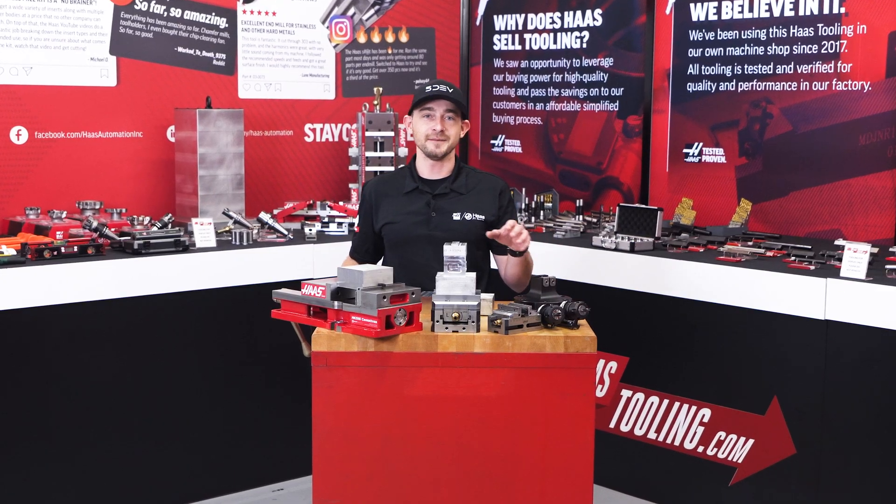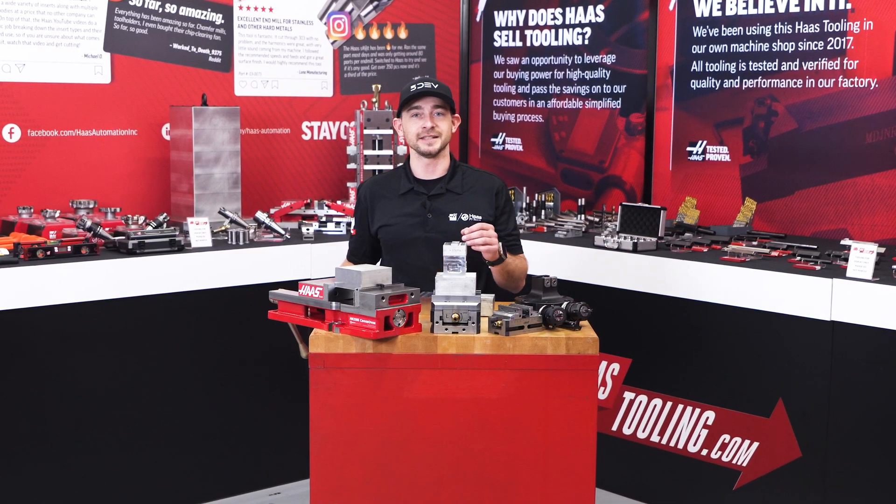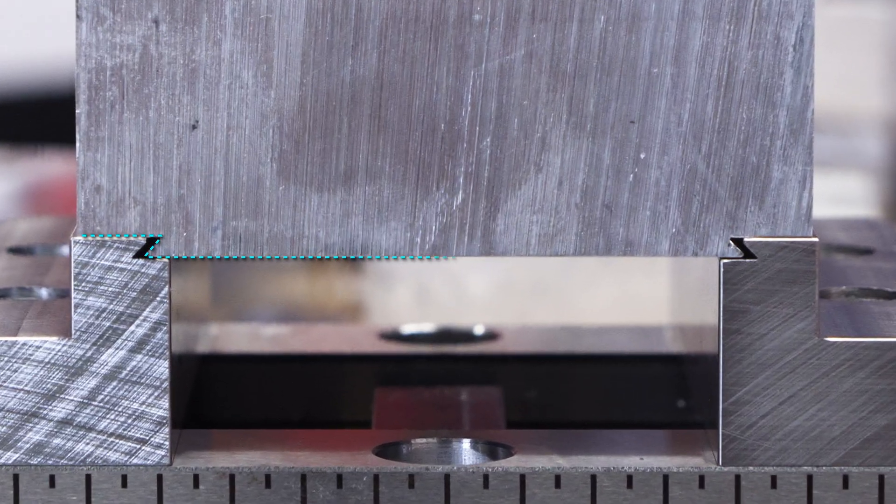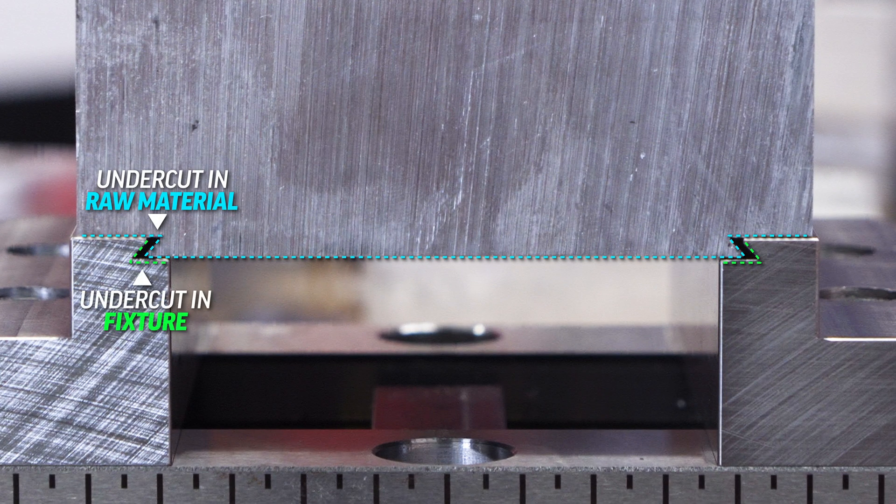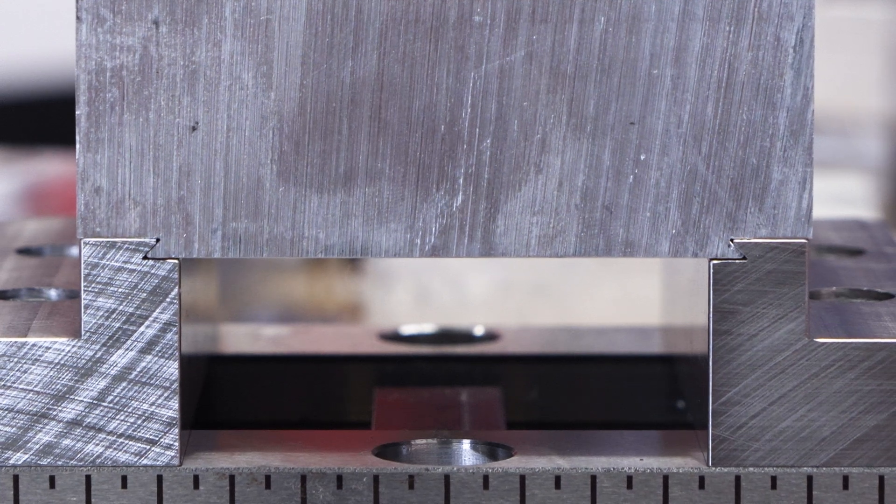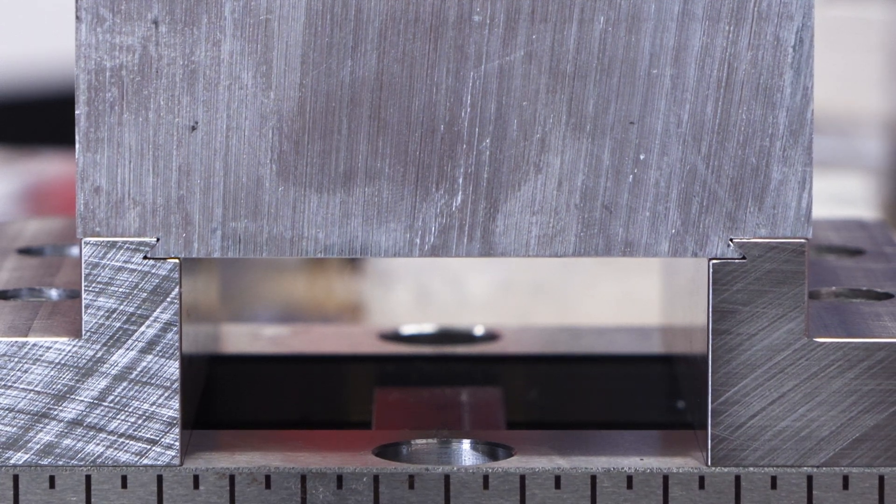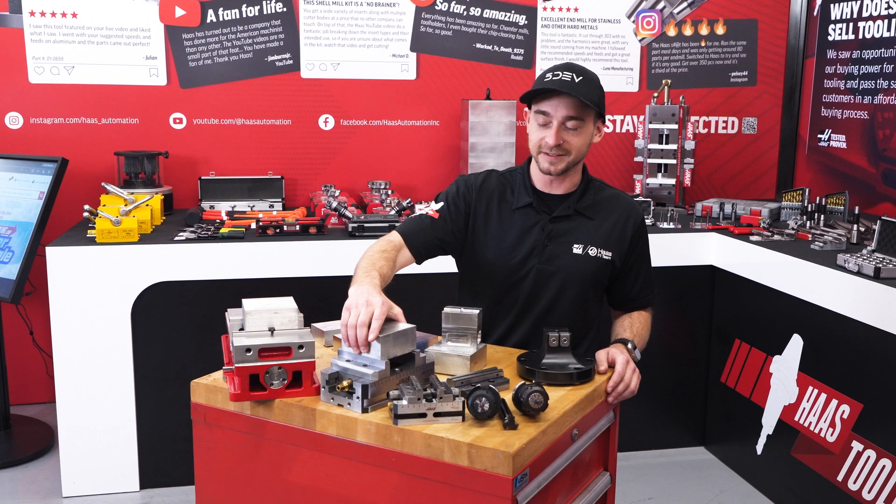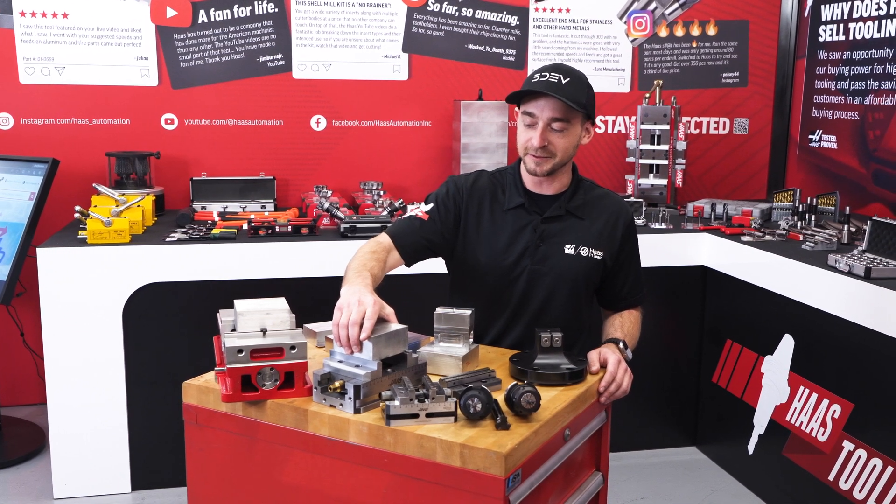Dovetail jaws use the same idea as these serrated jaws but take it to the next level by cutting an undercut into the raw material and having a matching undercut on the fixture. It creates a mechanical interlock that makes it much harder to pull this part out of the vise. So check this out, I don't even need to tighten this vise and this part's already impossible to remove.